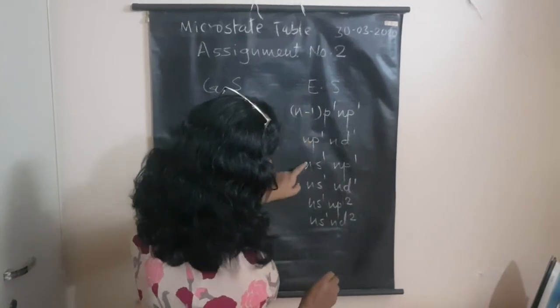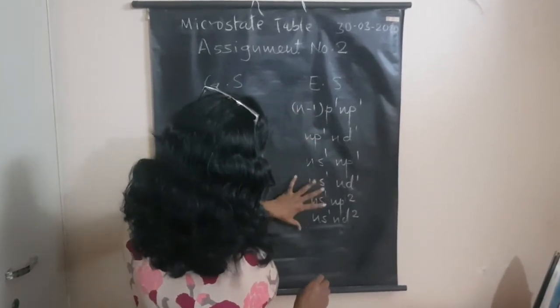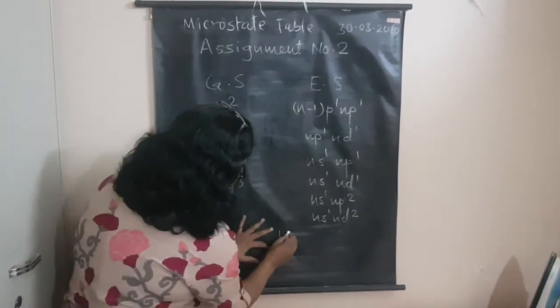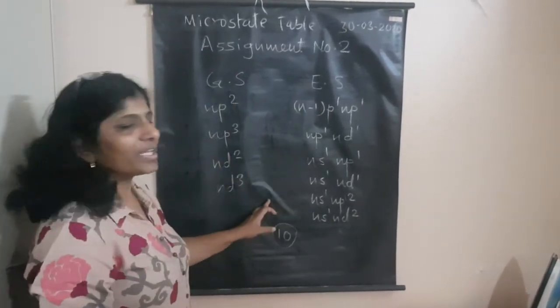These are 1, 2, 3, 4, 5, 6. These are the 6, and these are the 4. So total 10 microstate tables are there for our syllabus.